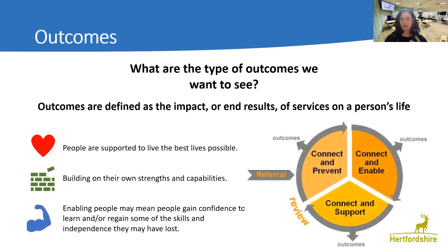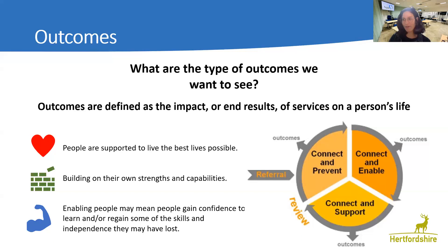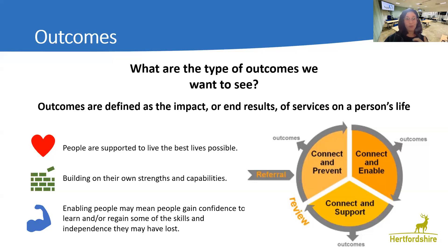Outcomes are defined as the impact or end results of services on a person's life. We want to support people to live the best life possible, build on their own strengths and capabilities, and enable people to learn or regain skills or independence they may have lost. People can improve — we want to really evidence that. This links to Connected Lives in Hertfordshire, a strengths-based approach to ensure people are living the best life possible through prevention, enabling, and connection.